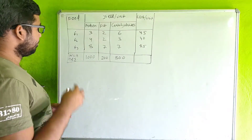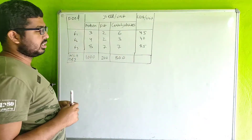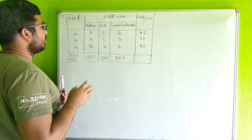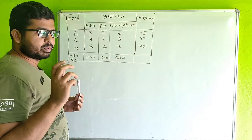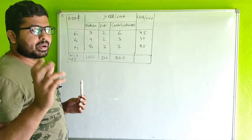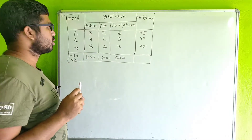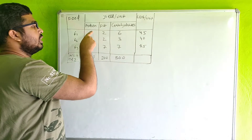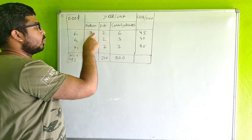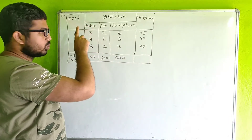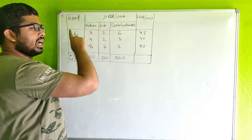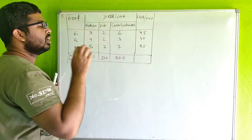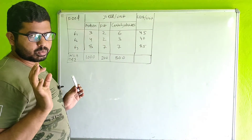F1 food is mixed with different protein, fat, and carbohydrates. F1 food has 3 units of protein, fat, and 6 units of carbohydrates.